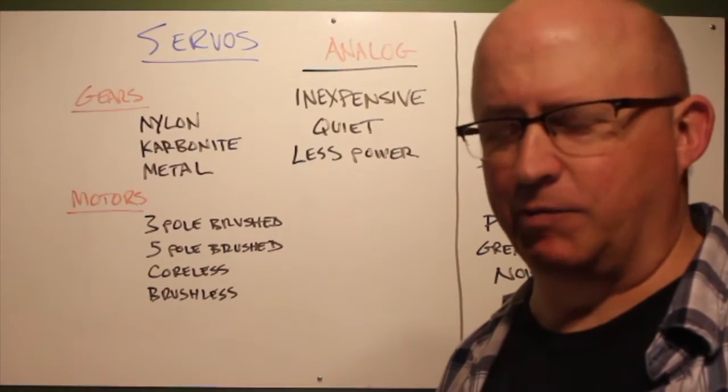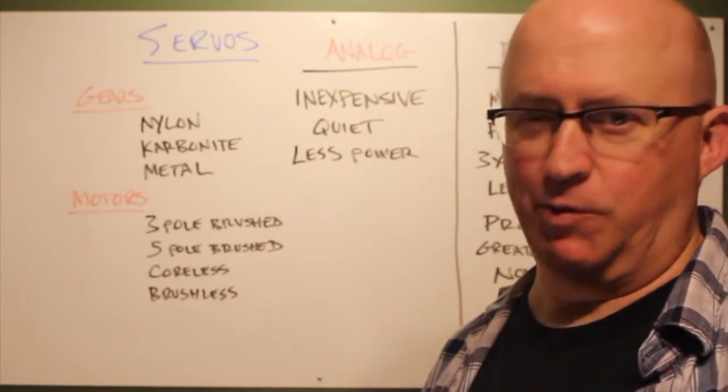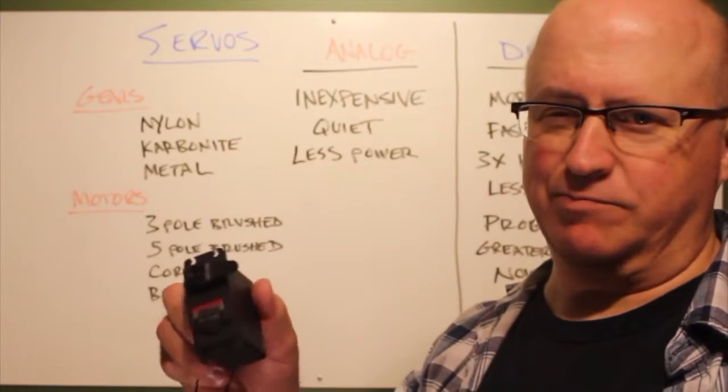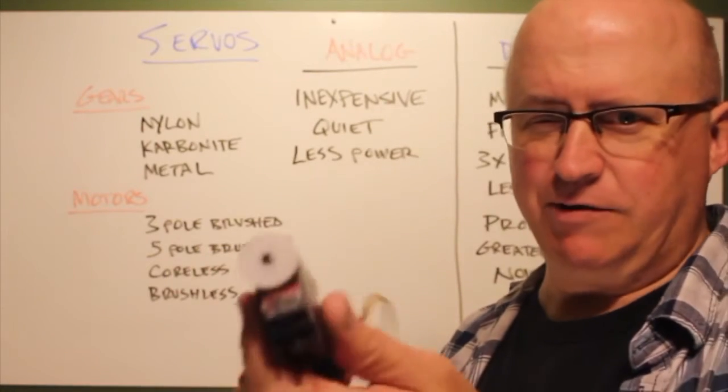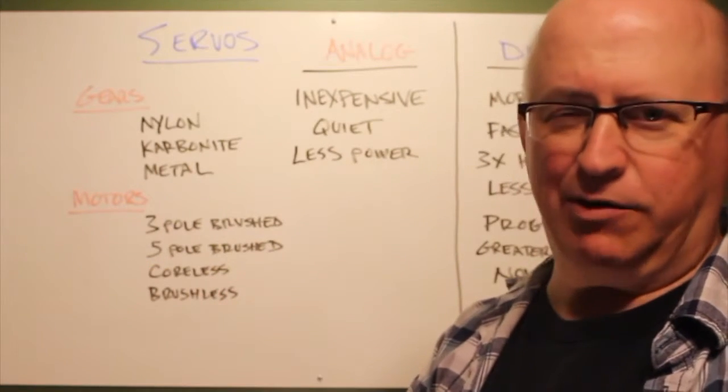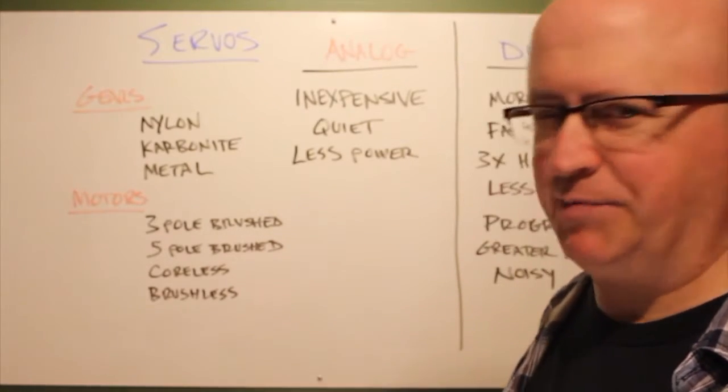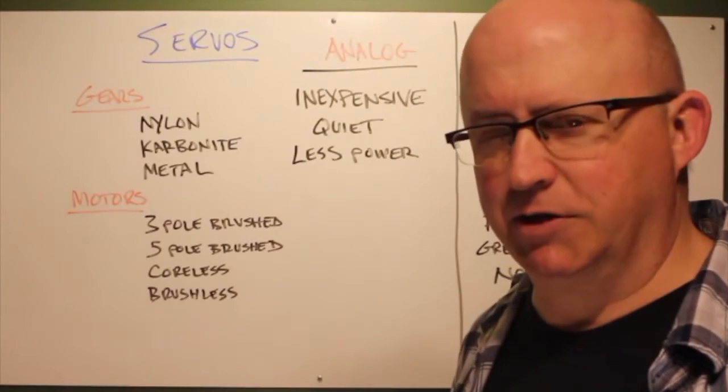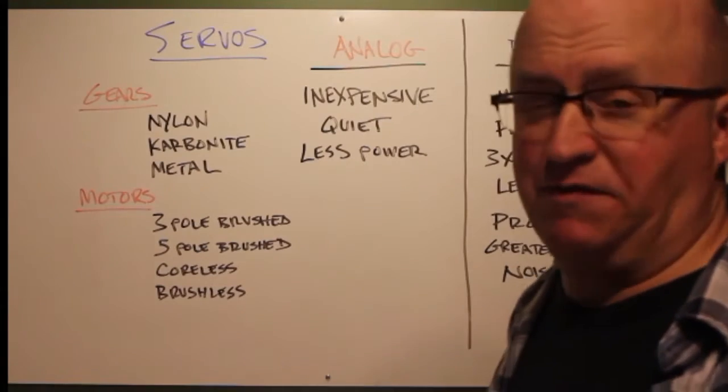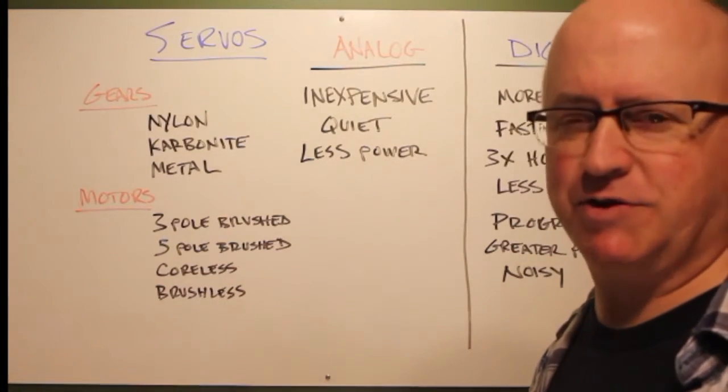The first step in figuring out what kind of servo you're going to use is what's going to fit in your application - what's going to fit inside your costume or the prop that you're trying to build. They come in quarter scale, standard size, micros, sub-micros, little tiny nano servos. There's pretty much something available out there for every application that you need size-wise. Once you decide what's going to fit, you've taken your measurements and you know what size range servo you're working with.